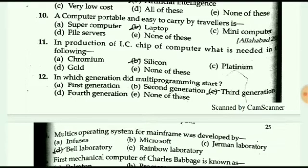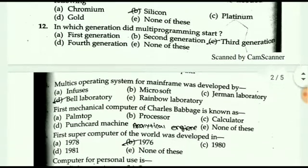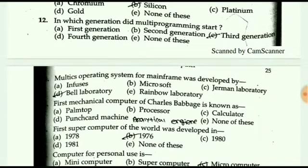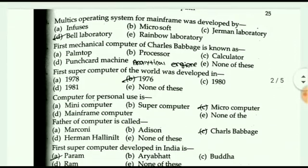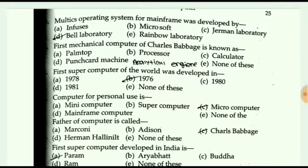Next question: what is needed for the operation of the IC chip of a computer? The answer is an integrated circuit in the silicon. In which generation did multiprogramming start? The answer is the third generation. The multi-operating system from the mainframe was developed by Bell Laboratory.